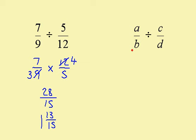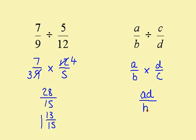For this one, I'm going to have A over B multiplied by D over C. This gives me AD over BC.